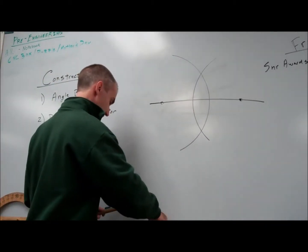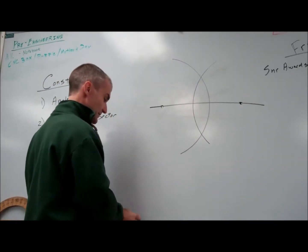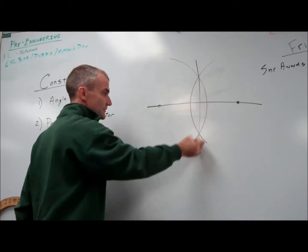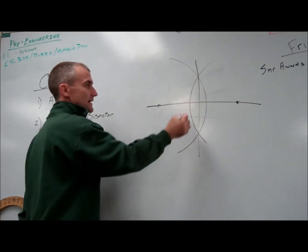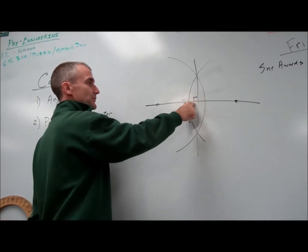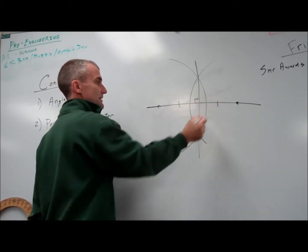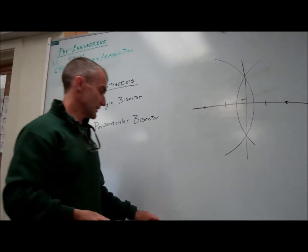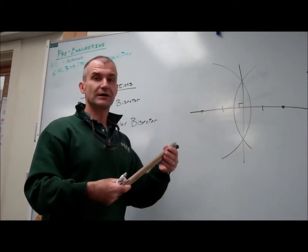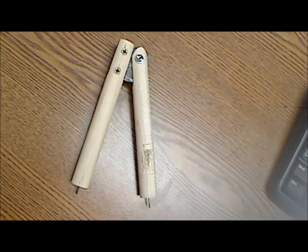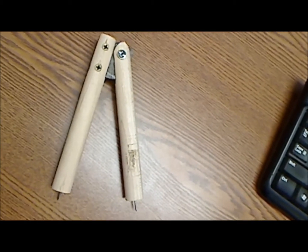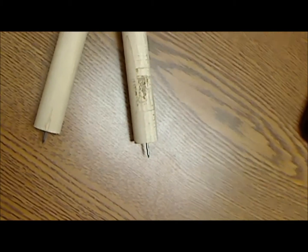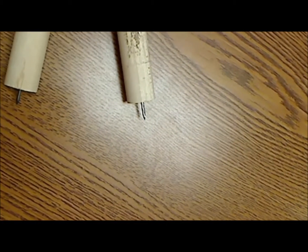So that's a perpendicular bisector. I use my straight edge and draw through here, and that gives me both a perpendicular and a bisector. There are a lot of constructions - those are just two of them that you'll be able to do with your new ruler and compass. This is what yours is going to look like: hinge at the top, six inches long, piece of lead, and a nail.